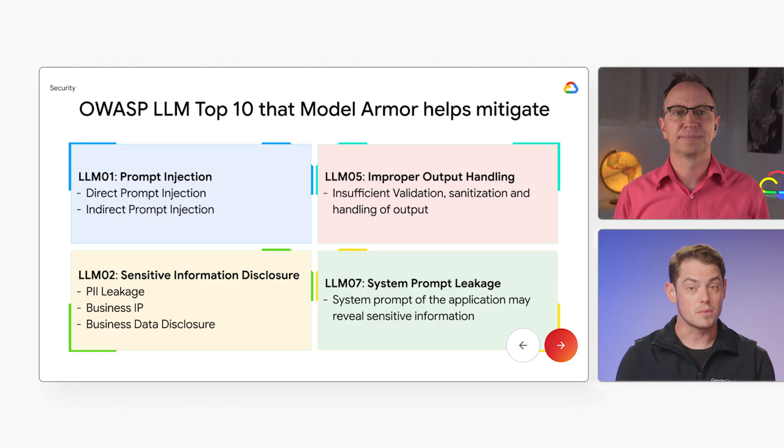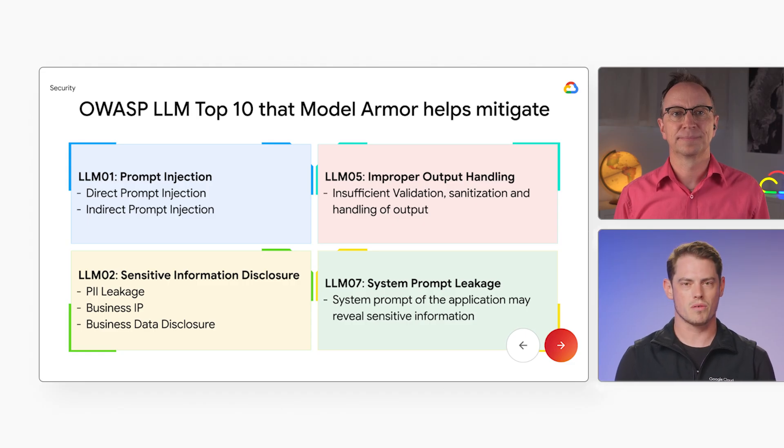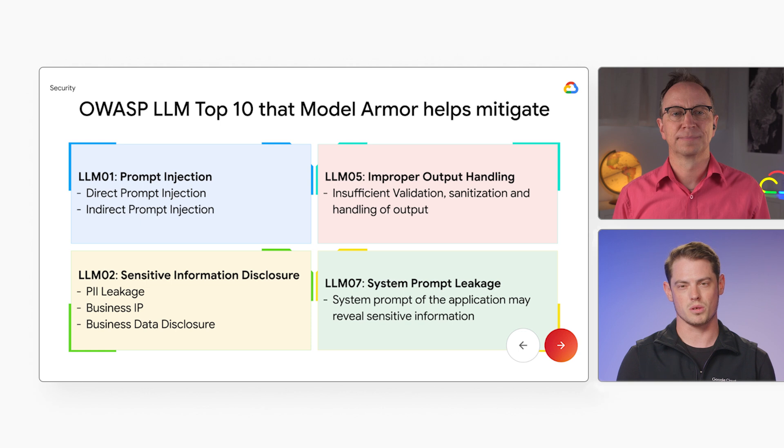AI opens up new possibilities, but also new risks. What are some threats that AI applications face? Well, the OWASP organization has created a list of the top 10 LLM vulnerabilities to watch out for. The list includes prompt injection, where malicious users manipulate our model through the prompts they send, and sensitive information disclosure, where your app leaks sensitive data.